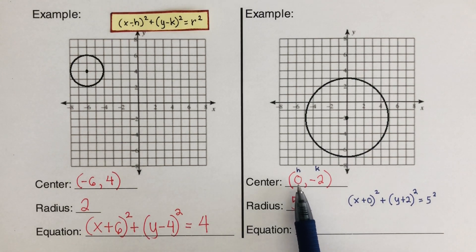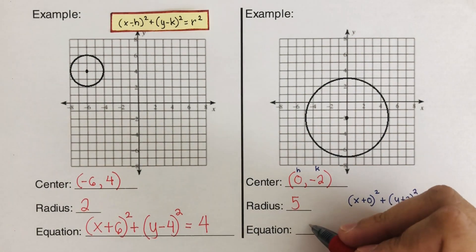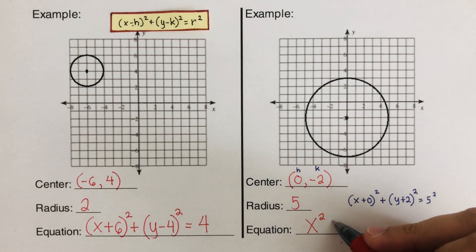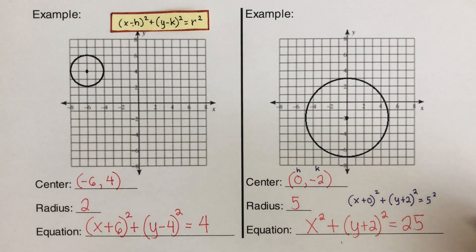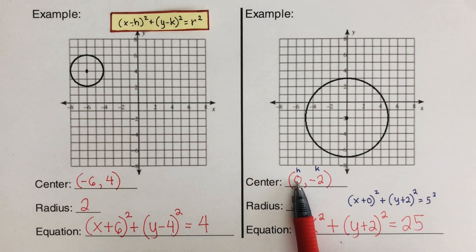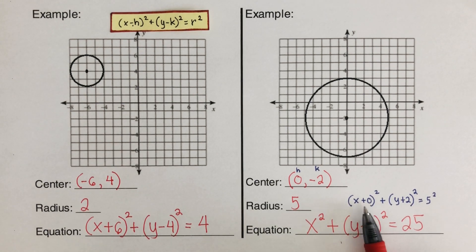Here's an important trick: when h or k is zero, you don't need to write the zero. So x minus 0 is just x, meaning we write x squared. The final simplified equation is x² + (y + 2)² = 25. If the k were zero instead, you'd write y² similarly. Anything added or subtracted with zero stays the same, so the zero term is dropped.